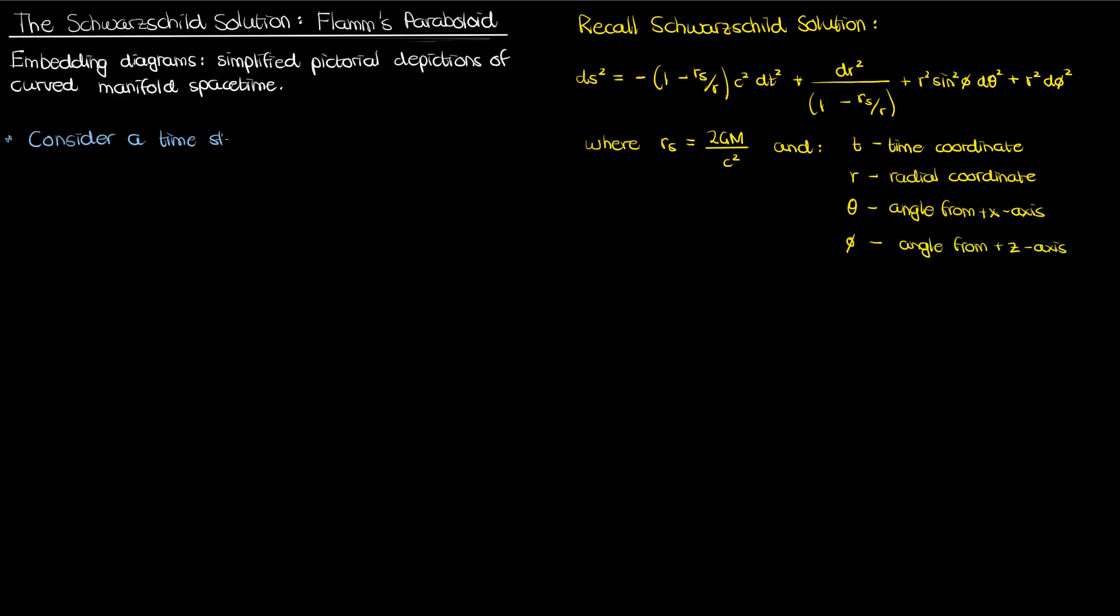We'll start by considering a time slice in our Schwarzschild geometry where we let the time coordinate be a constant. If we do that then dt becomes 0 and the Schwarzschild metric reduces to the following. Now the reason we can just consider a time slice is that no matter what time we look at, this spatial component of the Schwarzschild metric remains the same. It doesn't depend on time. So regardless of whether the time is 1, 2, or 10 units, the geometry of the Schwarzschild solution, the spatial part of the Schwarzschild solution, is still the same.